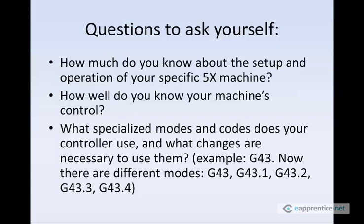The days of simple controllers are going away. Most machines coming out on the market now have different modes and different codes from what we're used to. For 3-axis machining, we have G43 — that's tool length compensation on a Fanuc. But on higher-end Fanuc controls, we've got multiple modes: G43, G43.1, G43.2, G43.3, and G43.4, and they all do different things. They're meant to be used in conjunction with other codes.